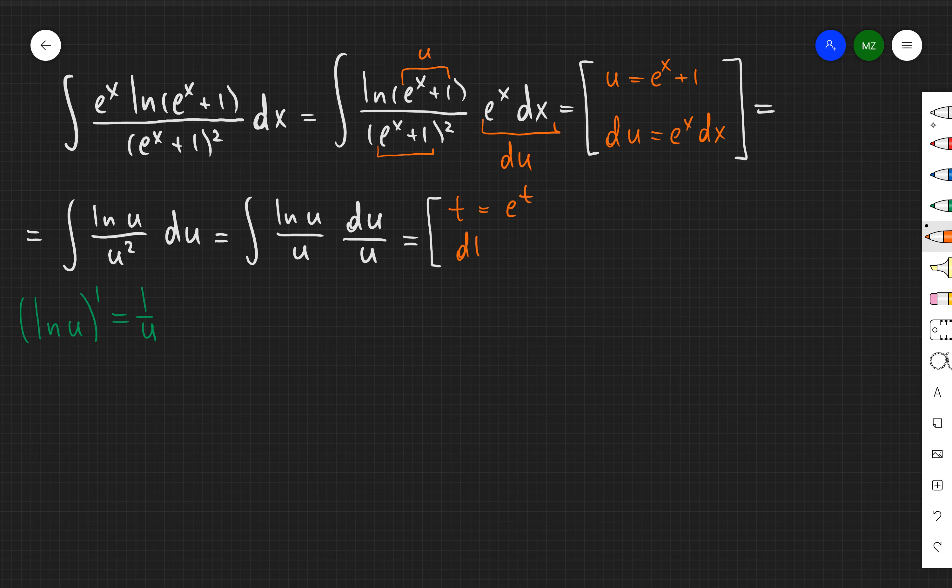And then I can apply the u sub again. But in this case what I'm going to say I'm going to set that my t to be equal to ln of u. And then dt is going to be equal to one over u times du or in other words du over u.